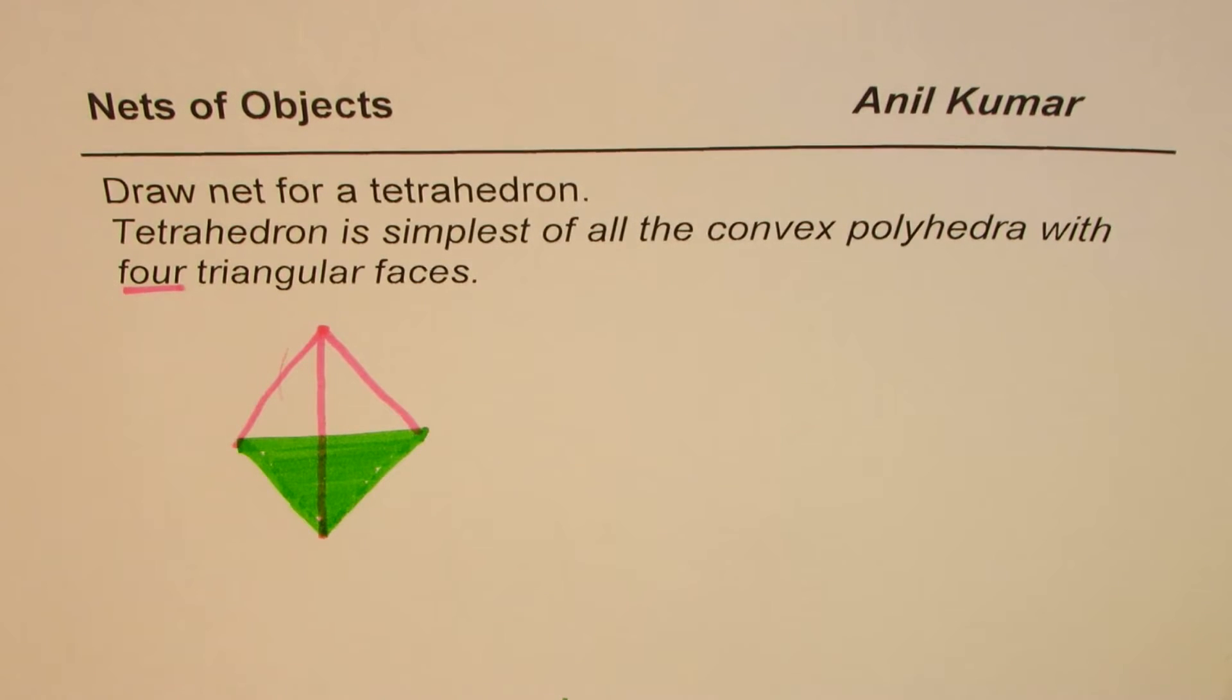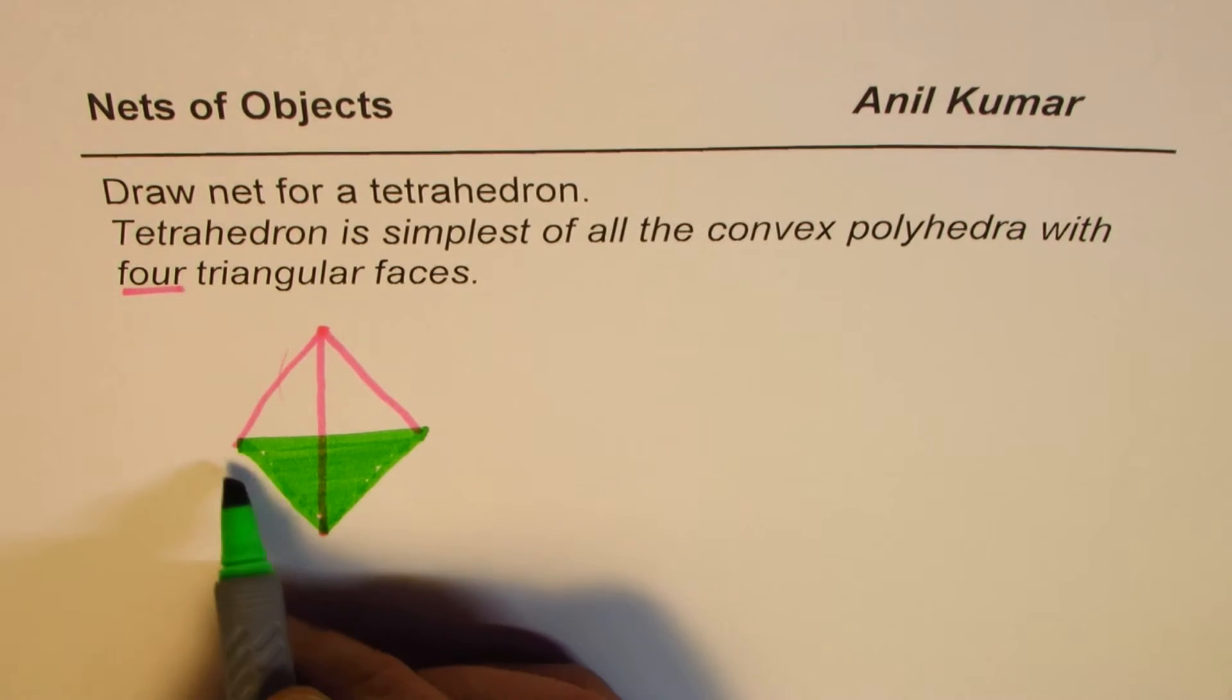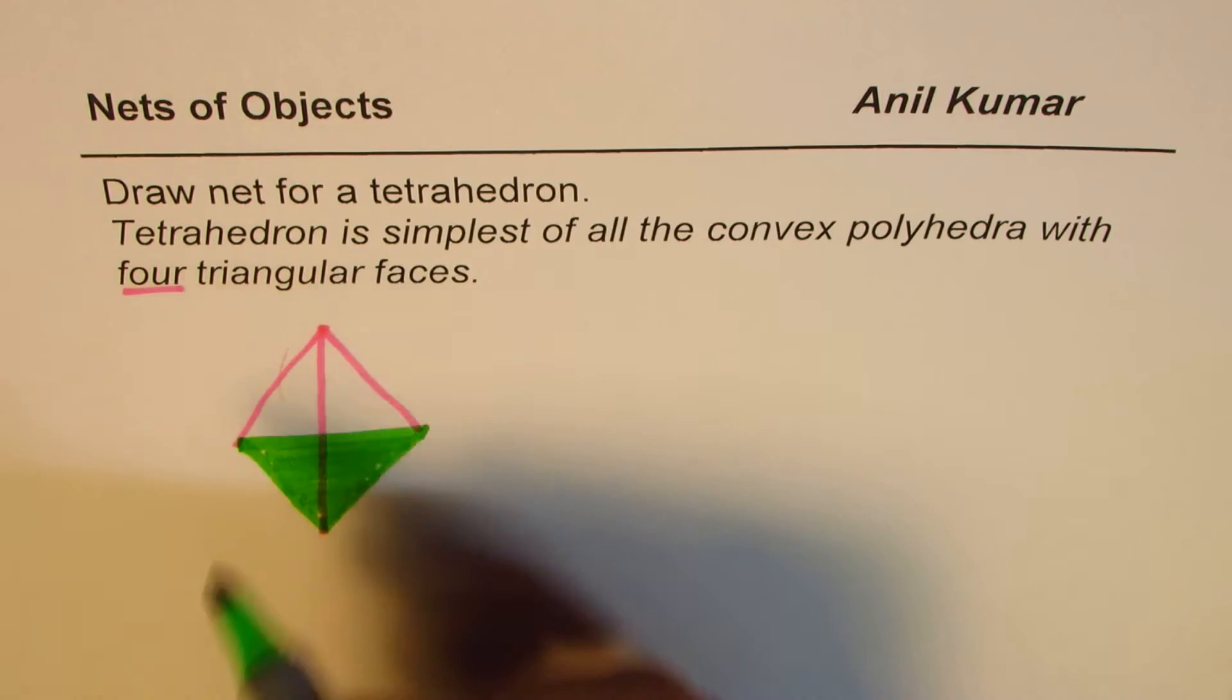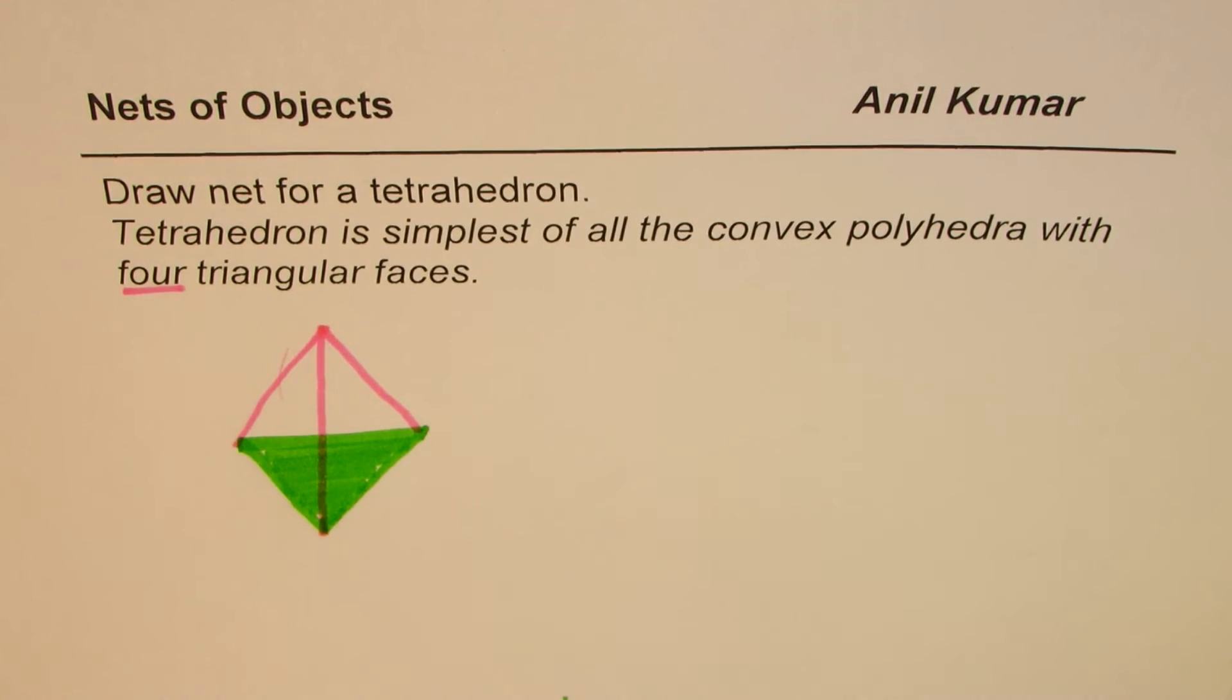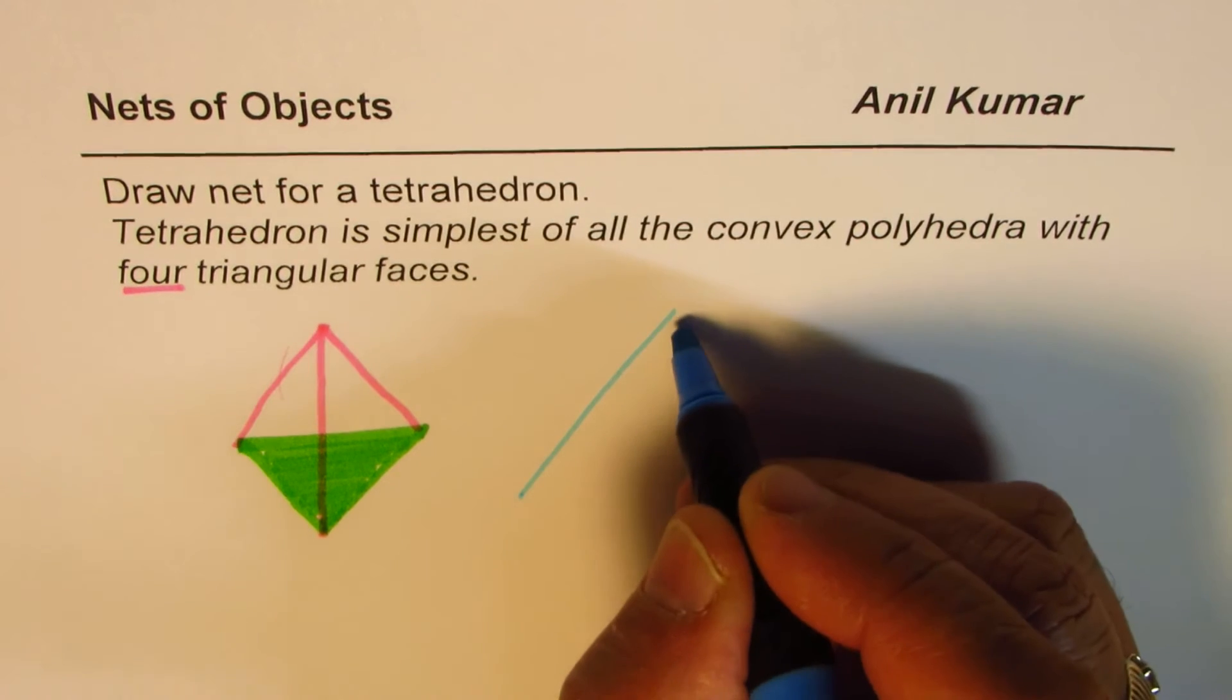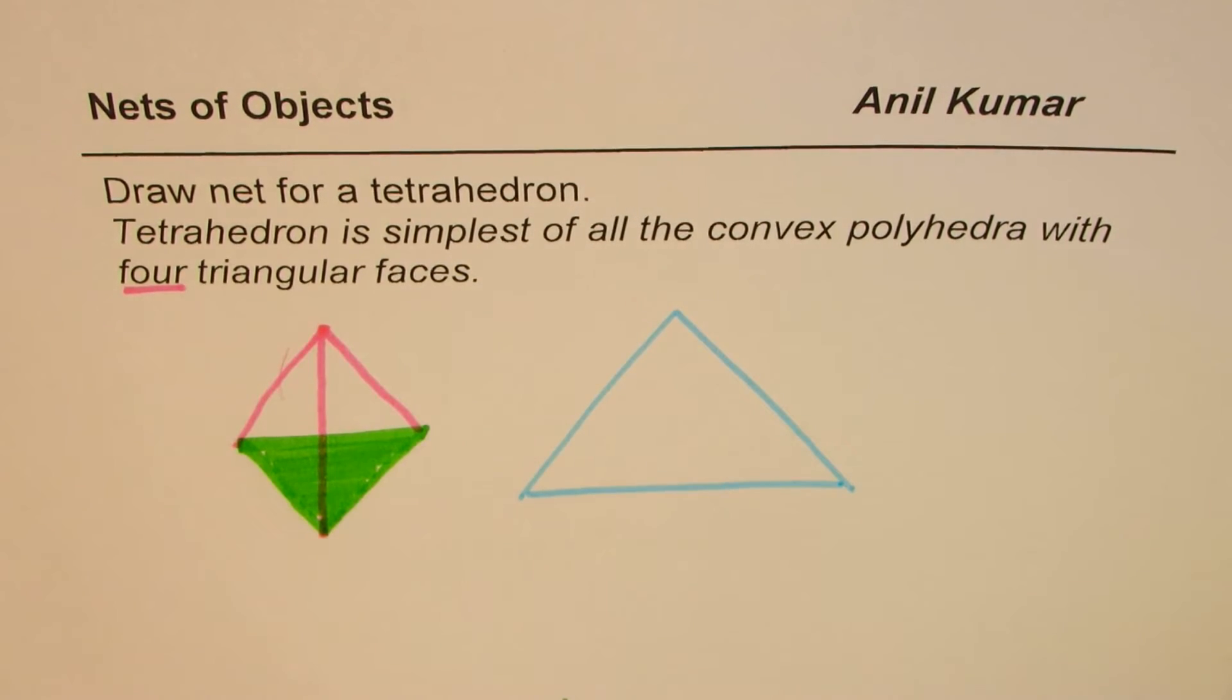Now one of the simplest ways of drawing this is you can actually draw the triangular base and then kind of open this up. So when you open this up, it opens up very neatly. You could show it like this. Let me show you in the form of a triangle. Let's say we have equilateral triangle for example here.